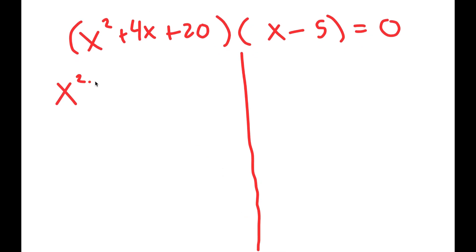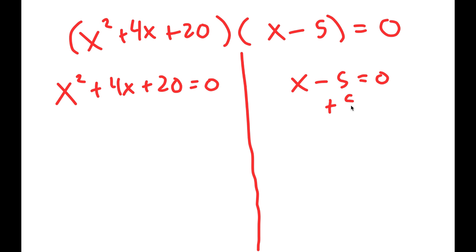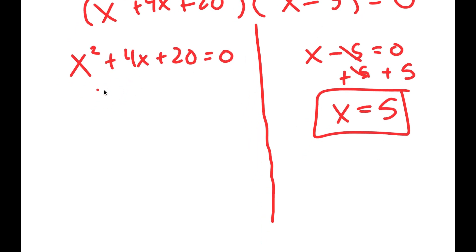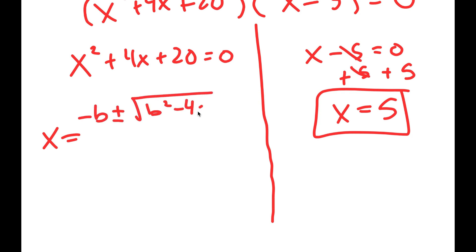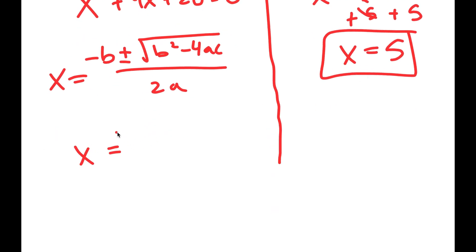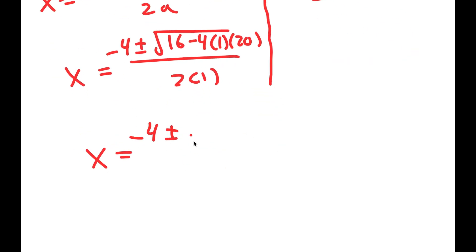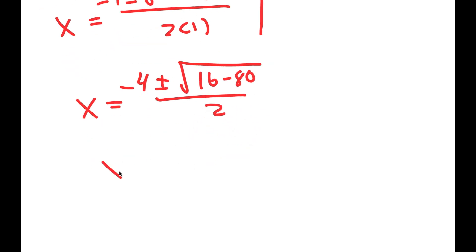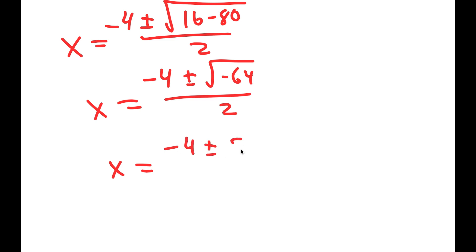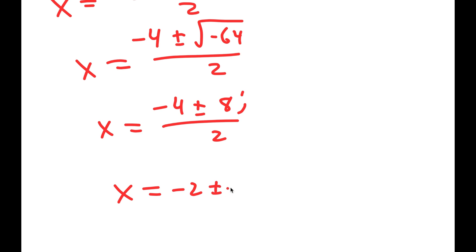From here, I get two equations: x squared plus 4x plus 20 equals 0, and x minus 5 equals 0. For x minus 5 equals 0, all I have to do is add 5 on both sides, and I get x is equal to 5. For x squared plus 4x plus 20 equals 0, I use the quadratic formula: negative b plus or minus the square root of b squared minus 4ac, all over 2a. So I get x equals negative 4 plus or minus the square root of 16 minus 80, all over 2, which is negative 4 plus or minus the square root of negative 64 over 2, which is negative 4 plus or minus 8i over 2, which equals negative 2 plus or minus 4i.